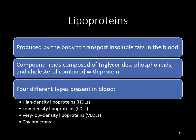Lipoproteins are produced by the body to transport insoluble fats through the blood. Most fats in our system — cholesterols, triglycerides — are hydrophobic, meaning they are not soluble in water and don't travel easily through it. Lipoproteins act like a taxi through the blood vessels, carrying triglycerides, cholesterols, and similar substances through the bloodstream. They are compound lipids composed of triglycerides, phospholipids, and cholesterol combined with protein.